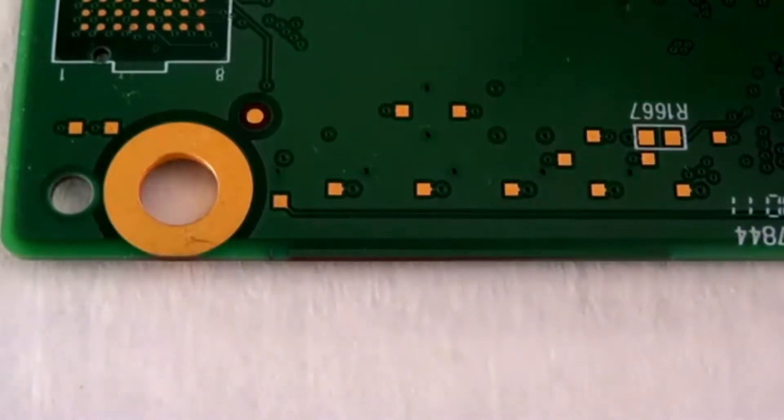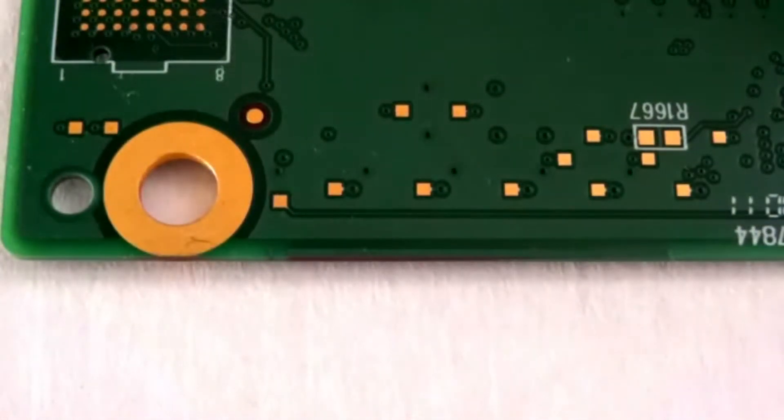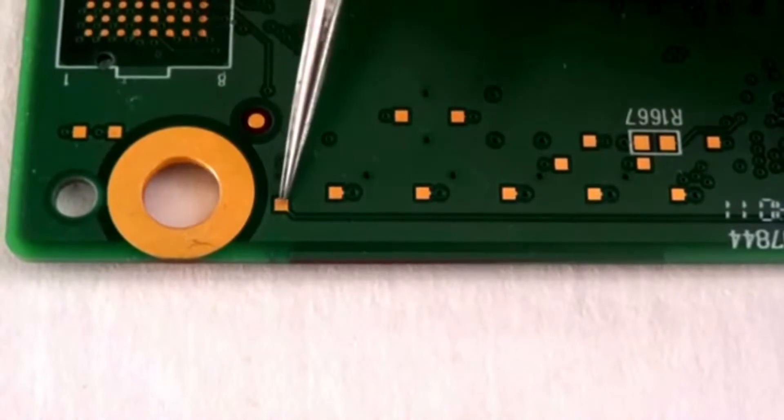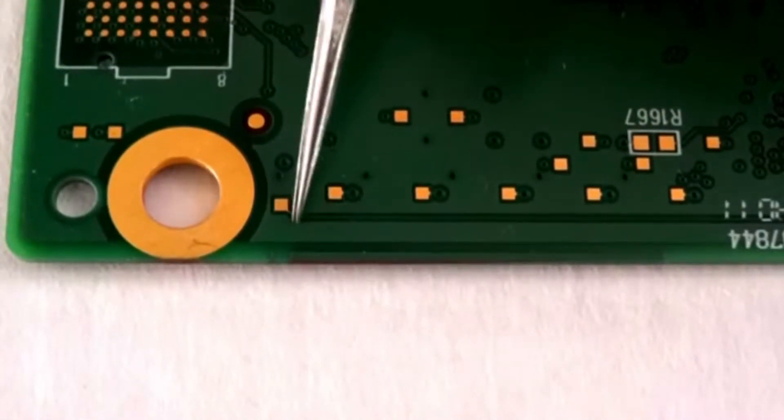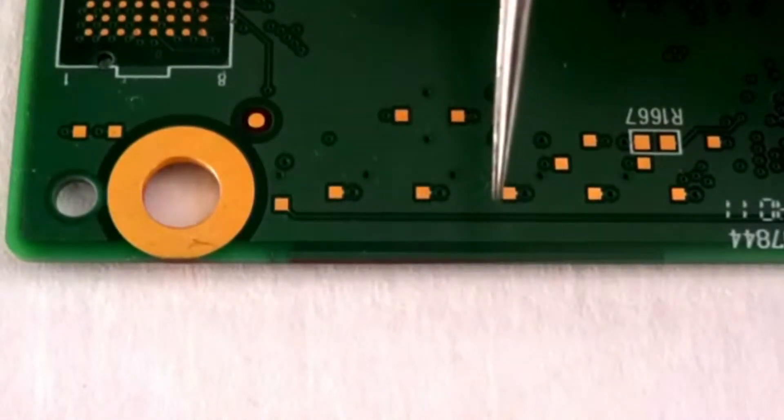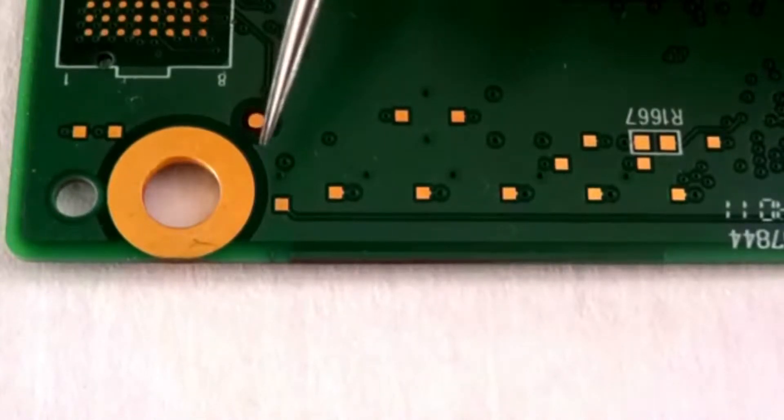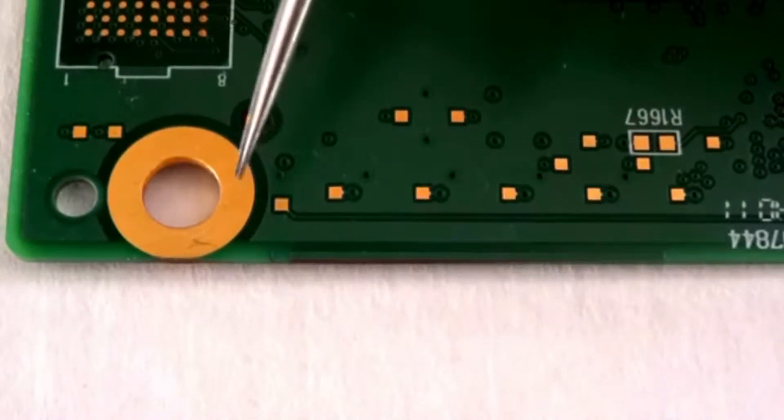On this board, the designer laid out a test trace for testing trace impedance. You can see the test point is here and the trace goes down here. The problem is there's no good ground reference point for the probe.